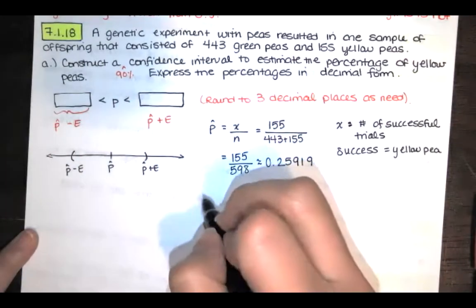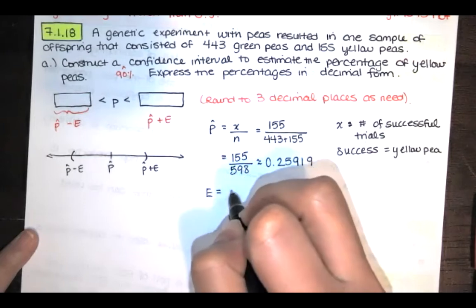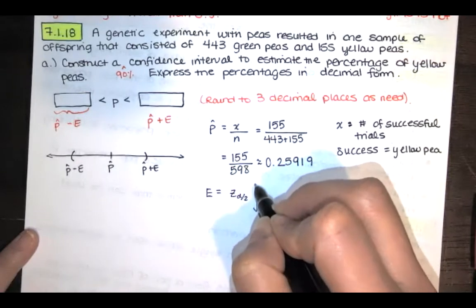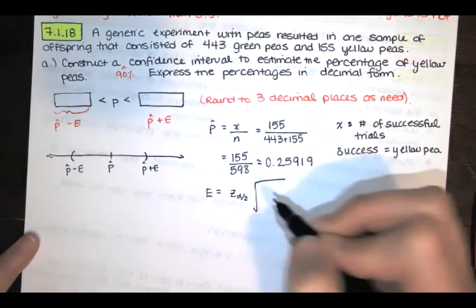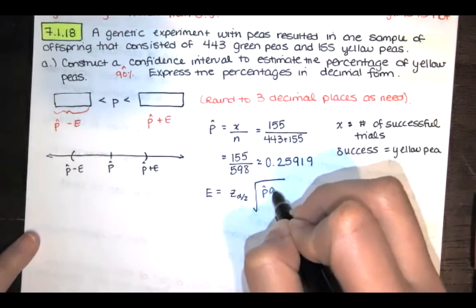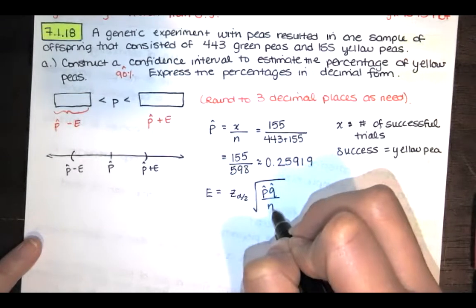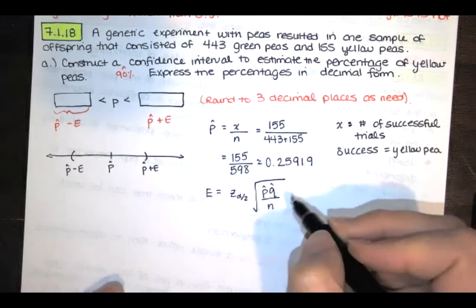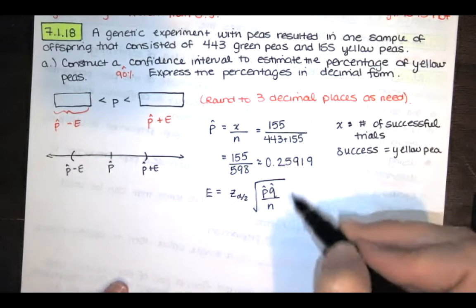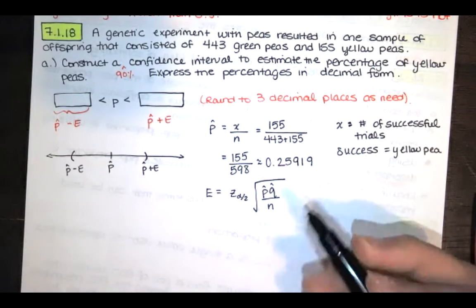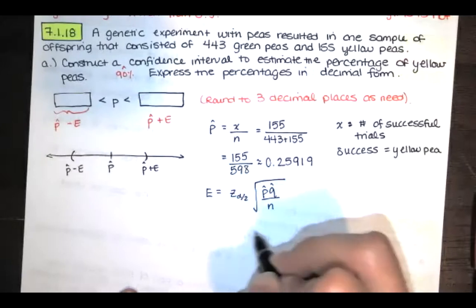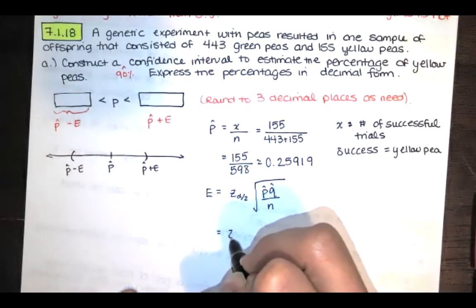Now for the error, we need z sub alpha over 2, and then we'll multiply by the square root of p-hat times q-hat over n. This is the estimated standard deviation of the sample proportions. Now if p-hat is equal to this, q-hat is equal to 1 minus that.